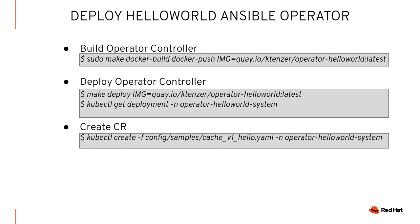We've basically got the code the way we want it, we've tested it, and now the next thing is how do we deploy our operator. We saw the Dockerfile and Makefile — we can use make to build a Docker image, wrapping our code in a container and publishing it to a registry. I'm using Quay.io. Once we've published it, we're going to deploy it. The SDK has already created a deployment for this, so we just run the command. It's going to deploy in a project called operator-helloworld-system by default. Then we'll create a CR against that deployment and make sure it's working.